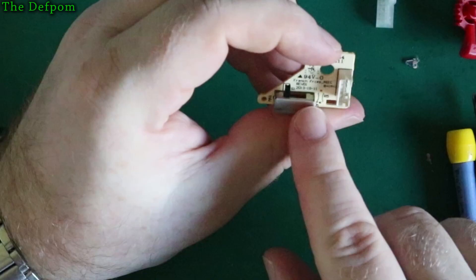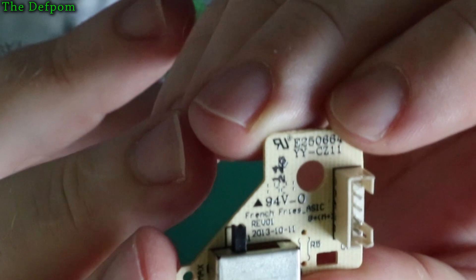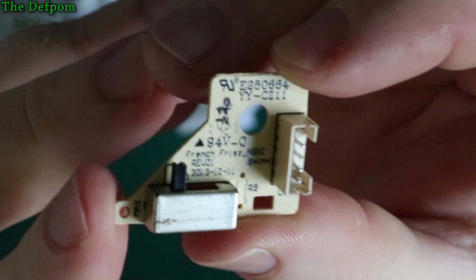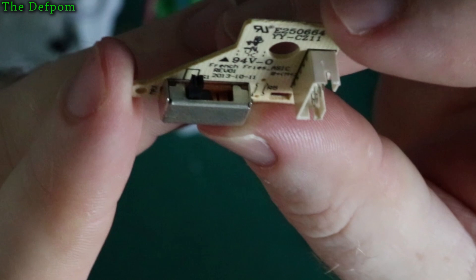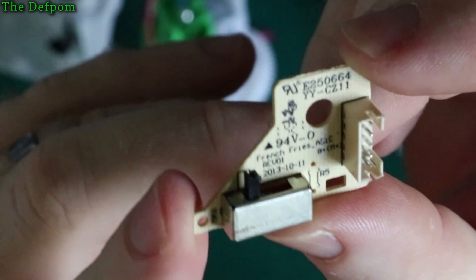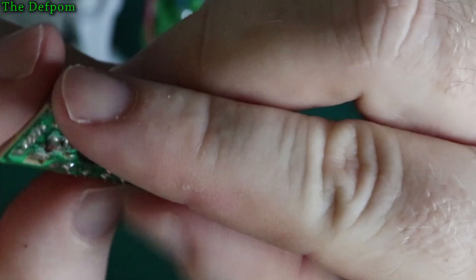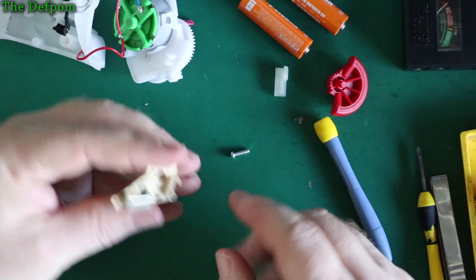I should show you this side actually. You can see on there it says French fries ASIC. Interesting. French fries ASIC. And it's revision 01, 2013. Well, 2013, 10, 11. So it could be 11th of the 10th or 10th of the 11th, whichever way you perceive it. That's it, that's the brains of it. Not a lot to it, is there?